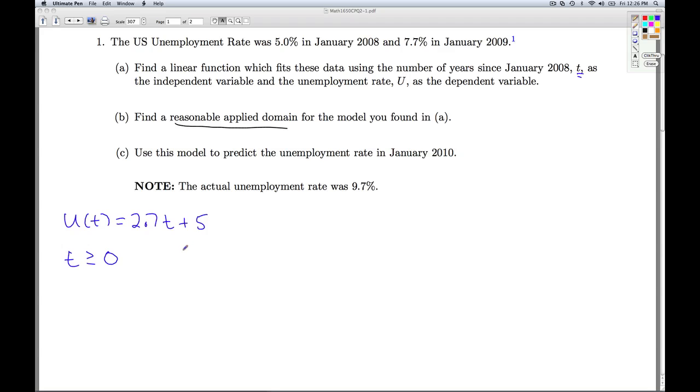Now, can we think of any other practical considerations? Well, certainly the unemployment rate can't be anything higher than 100%, right? You can't have 150% unemployment. So, the other thing we would need is we would need that u of t would have to be less than or equal to 100%. We would also need the u of t to be bigger than or equal to 0 as well, but we know from our graph that t bigger than or equal to 0 is going to make sure that's true as well. So, this is the only thing we really have to solve for here.